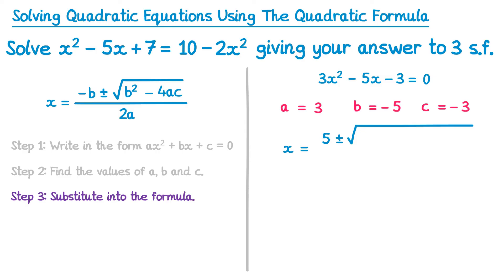Now anytime you write a negative number, I'd suggest you write it in brackets. So instead of just 5 squared, negative 5 in a bracket squared. Minus 4 times a, and a is 3, and then times c, which is negative 3. And again, you can see I've used a bracket for that negative number. All divided by 2a, and a is 3, so it's 2 times 3.